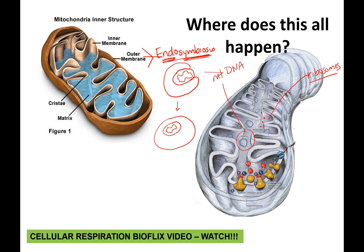This will definitely be a concept on the final exam. The inner membrane used to be the prokaryotic cellular membrane. It has a lot of folds called cristae, which give it more surface area — more membrane than a simple circle — allowing for more cellular respiration. On the cristae, there is a series of proteins called the electron transport chain, embedded on that inner membrane.